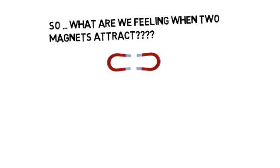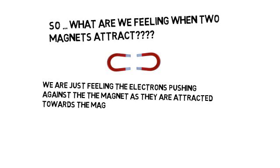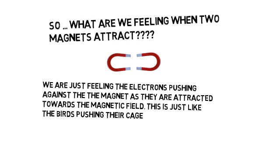So what are we feeling when two magnets attract? We are just feeling the electrons pushing against the magnet as they are attracted towards the magnetic field. This is just like the birds pushing their cage.